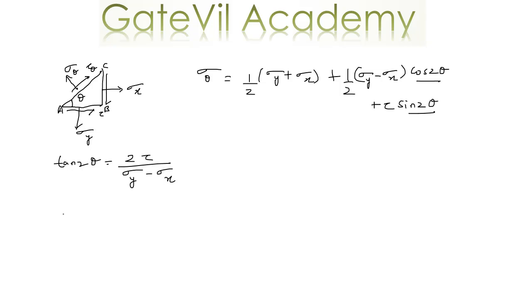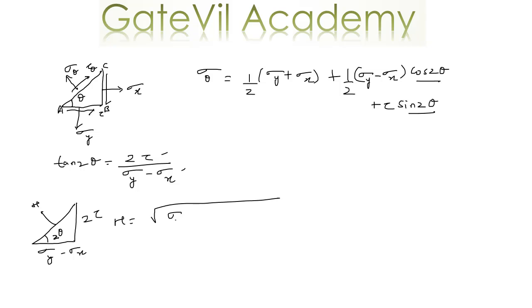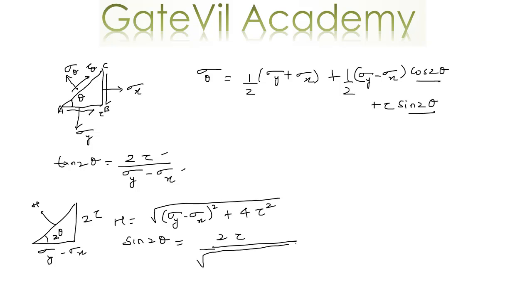We can represent this expression in the form of a triangle. With the 2θ angle, tan 2θ equals perpendicular over base, so we represent one side by 2τ and the other by (sigma y − sigma x). The hypotenuse h will equal the square root of (sigma y − sigma x)² plus 4τ². This equation gives two values of 2θ, as mentioned.